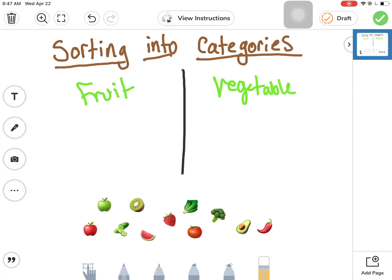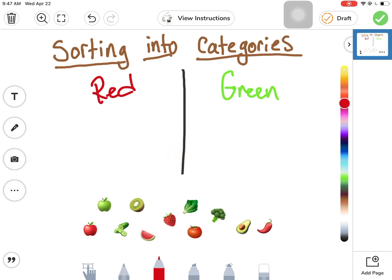Okay, so instead of doing fruits and vegetables, let's do something that's a little bit easier. I'm going to write my categories up here. Anything that is green goes over here, and anything that is red goes over here.